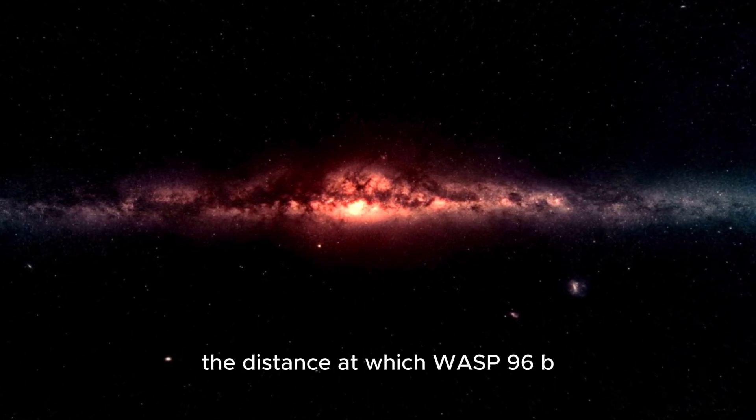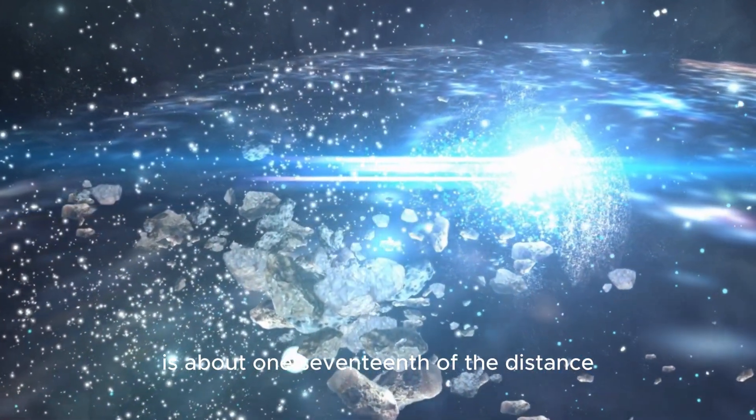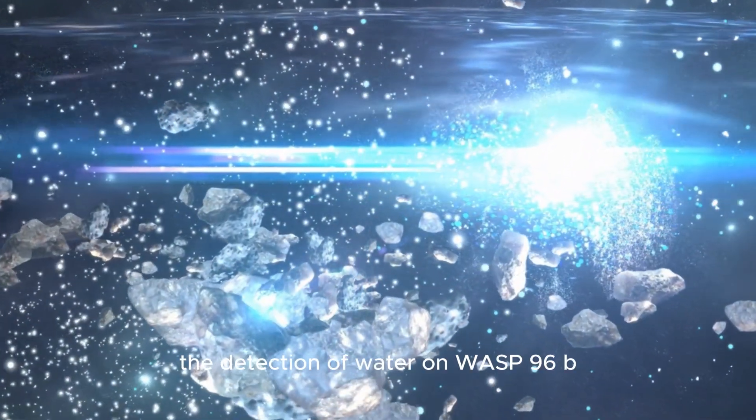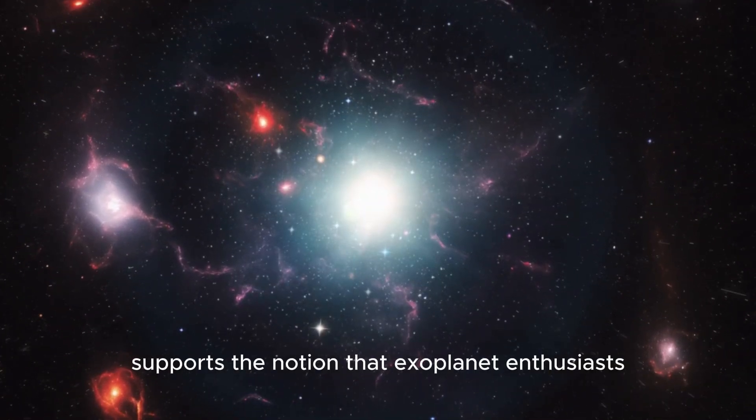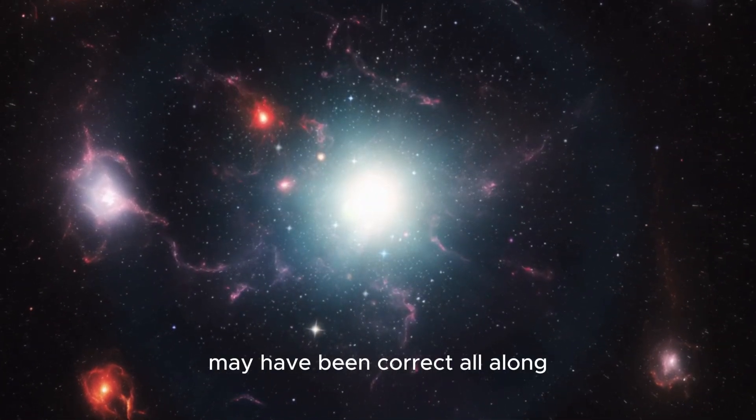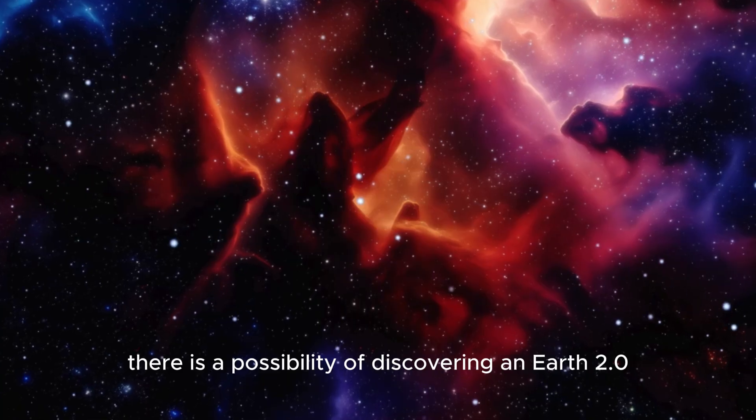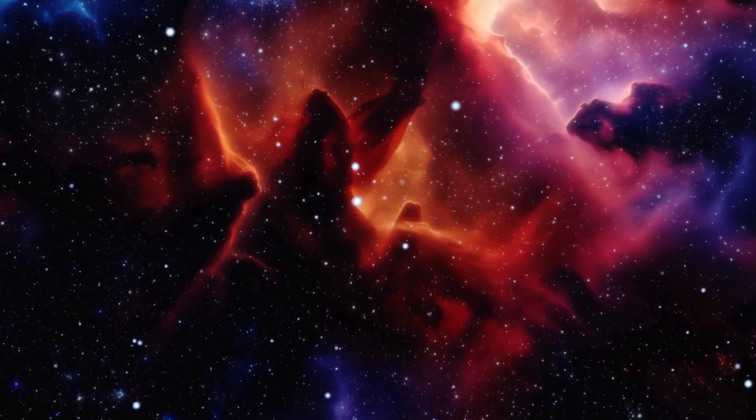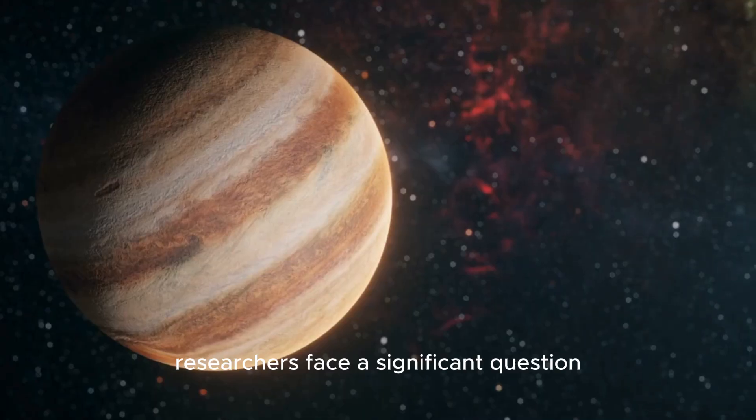The distance at which WASP-96b orbits its star is about 1/17th of the distance between Mercury and the Sun. The detection of water on WASP-96b supports the notion that exoplanet enthusiasts may have been correct all along in believing there is a possibility of discovering an Earth 2.0 among these exoplanets. Beyond the excitement of this revelation, researchers face a significant question.